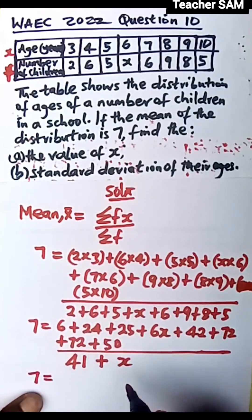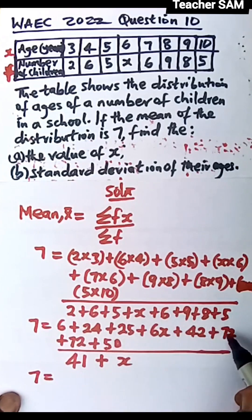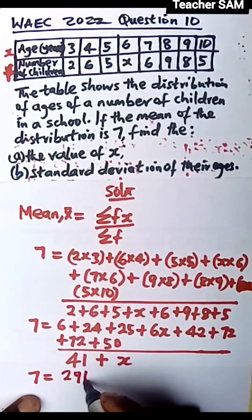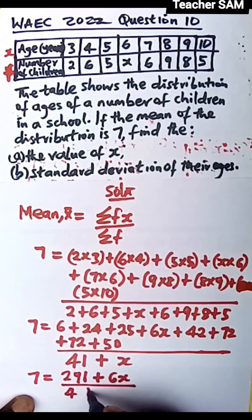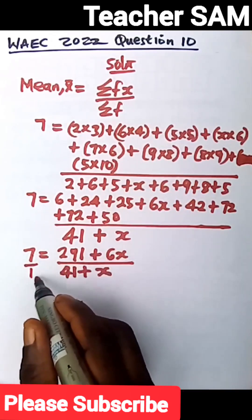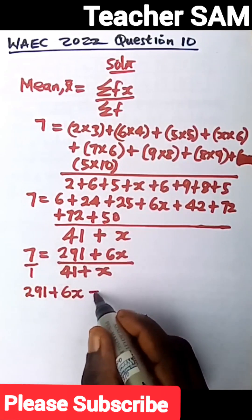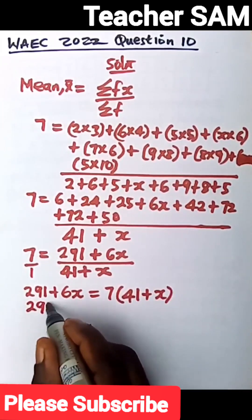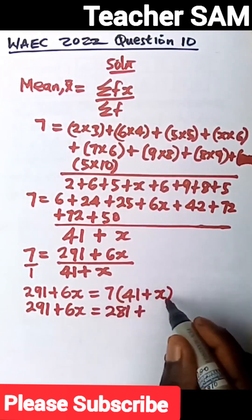We now have 7 equals to: adding up all the numbers excluding 6X gives 291, plus 6X, all over 41 plus X. Making this over 1 and cross-multiplying: 1 times (291 plus 6X) equals 7 times (41 plus X). So we have 291 plus 6X equals 7 times 41, which is 287, plus 7X.